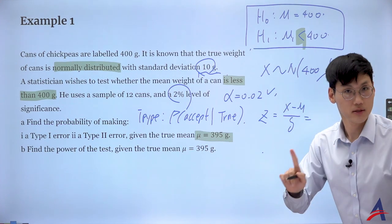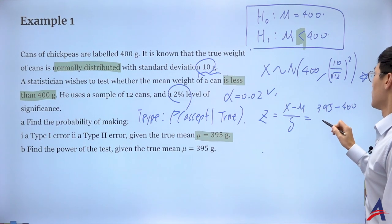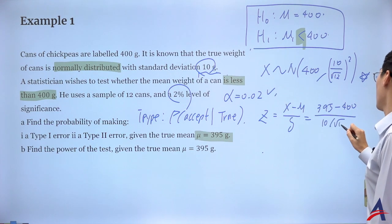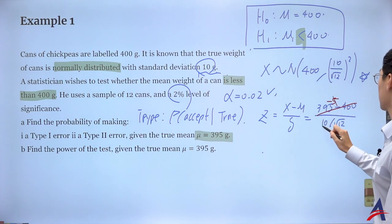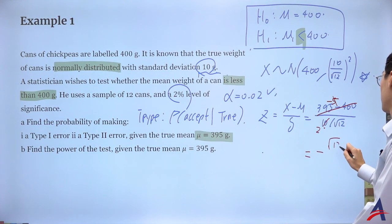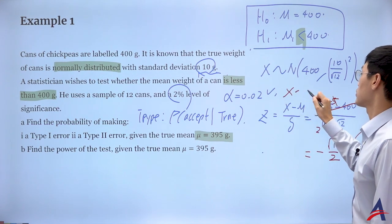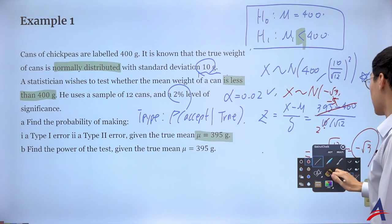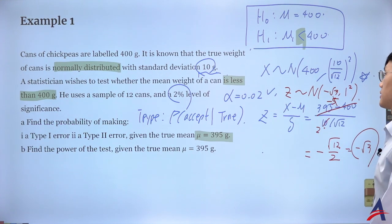The standardized Z after translating is Z = (X - mu) / sigma. So I compute: (395 - 400) / (10 / √12), which gives -5 divided by 10/√12. Simplifying, that's -√12/2 = -2√3/2 = -√3. So my true distribution, after standardizing, is N(-√3, 1).